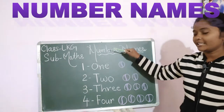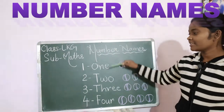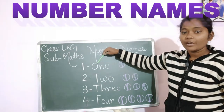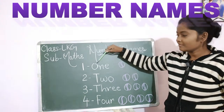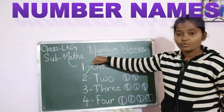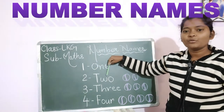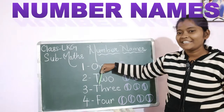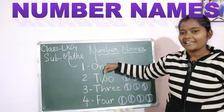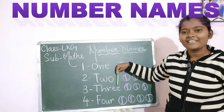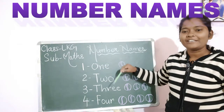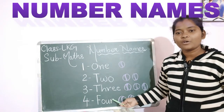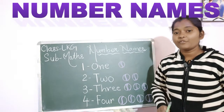Very good! Now let's repeat with me once again. 1 — O-N-E — 1. 2 — T-W-O — 2. 3 — T-H-R-E-E — 3. 4 — F-O-U-R — 4.